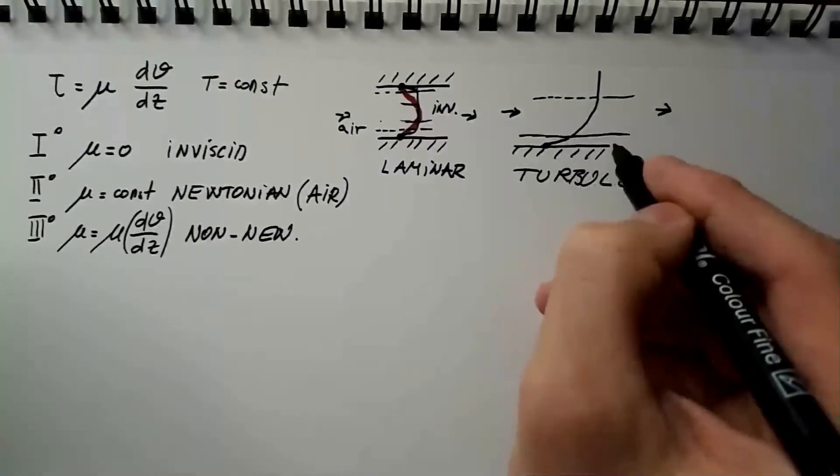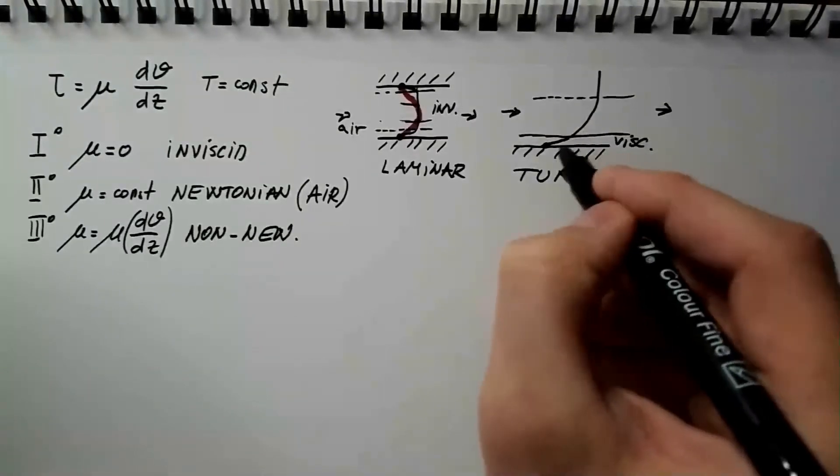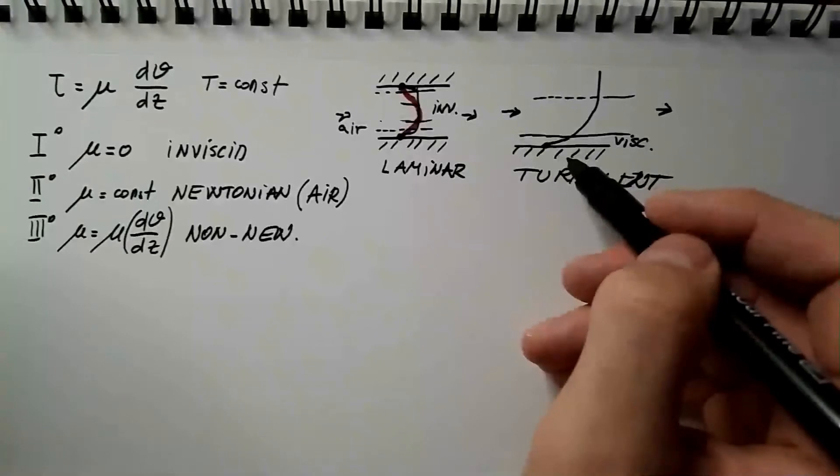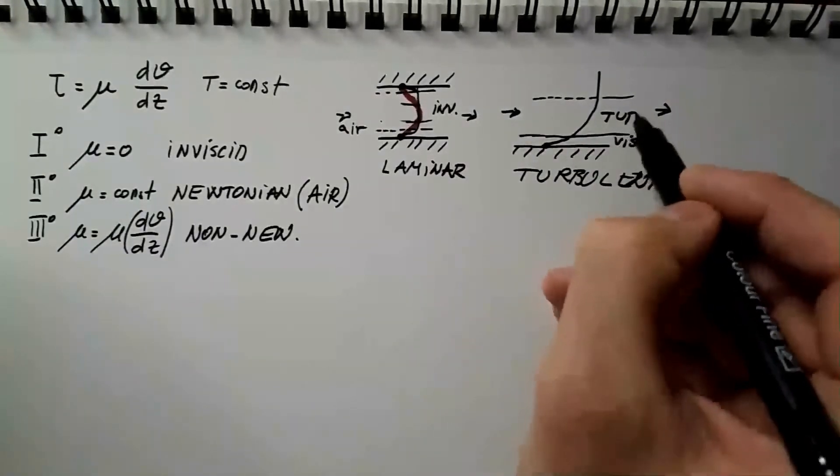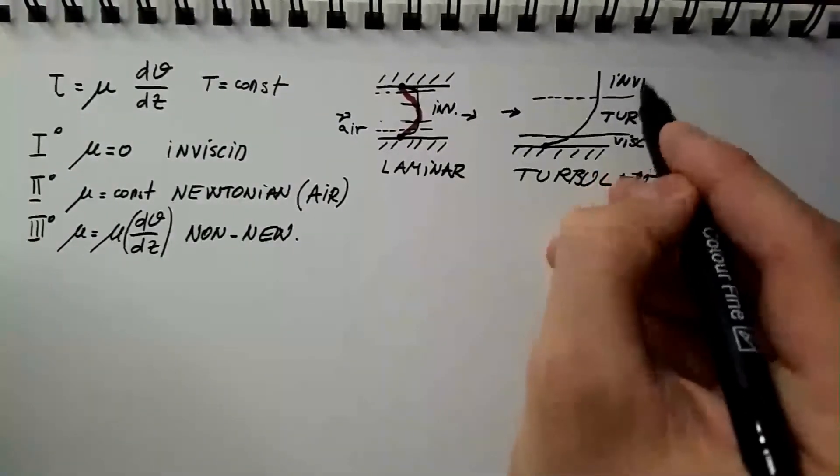Here, we have viscosity that is dominating the flow, this flow is really laminar, but this is on the scale of millimeters or centimeters in the atmosphere. And here, we have part of the profile where turbulence is very important. And here, we have inviscid flow.